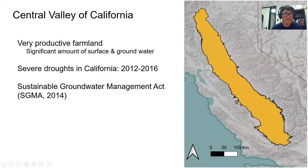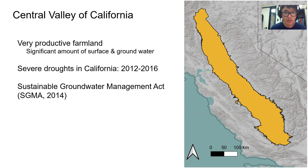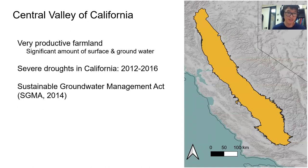The Central Valley of California is one of the most productive farmlands in the world, and to maintain this agricultural productivity, it uses a significant amount of surface water as well as groundwater. Severe drought in California between 2012 and 2016 has drastically increased the amount of groundwater usage in the valley, which has threatened groundwater sustainability.